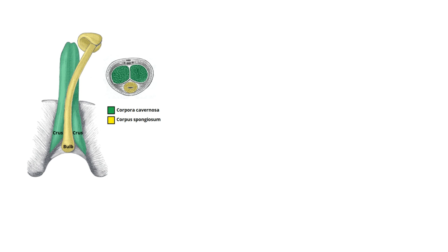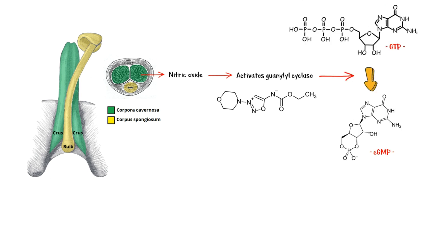Before moving on, a bit of physiology. During sexual arousal, nitric oxide is released from nerve terminals and endothelial cells in the corpus cavernosum of the penis. This nitric oxide activates an enzyme called guanylate cyclase, which converts guanosine triphosphate (GTP) into cyclic guanosine monophosphate (cGMP).